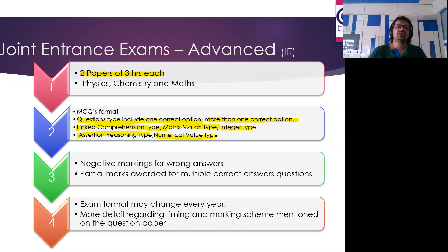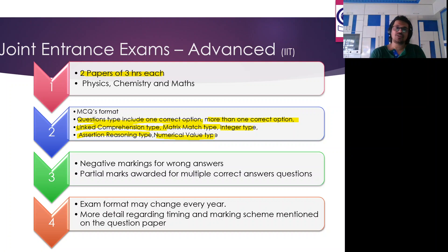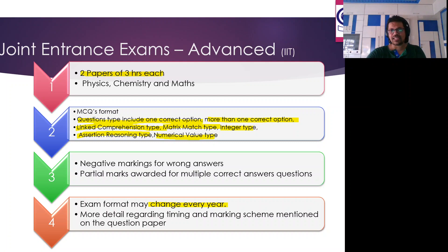JEE Advanced also has numerical value types and assertion-reasoning questions. The concept is the same as Mains, but the paper is set more on analytical thinking. If a child develops analytical thinking, that really changes the entire focus. There is negative marking for wrong answers and partial marking for multiple correct options. The paper format is not fixed — it keeps changing every year. If you qualify Mains, you should definitely give Advanced a shot. This is the JEE Advanced pattern, precisely for the IITs.